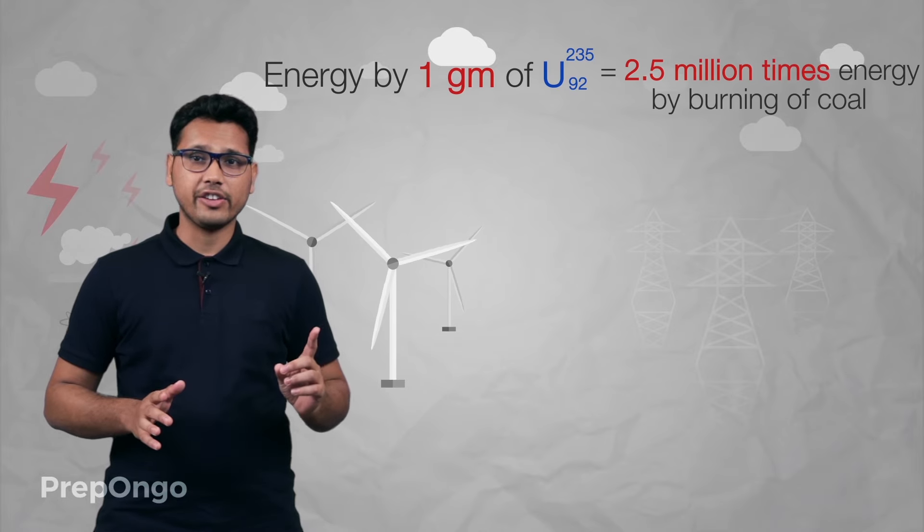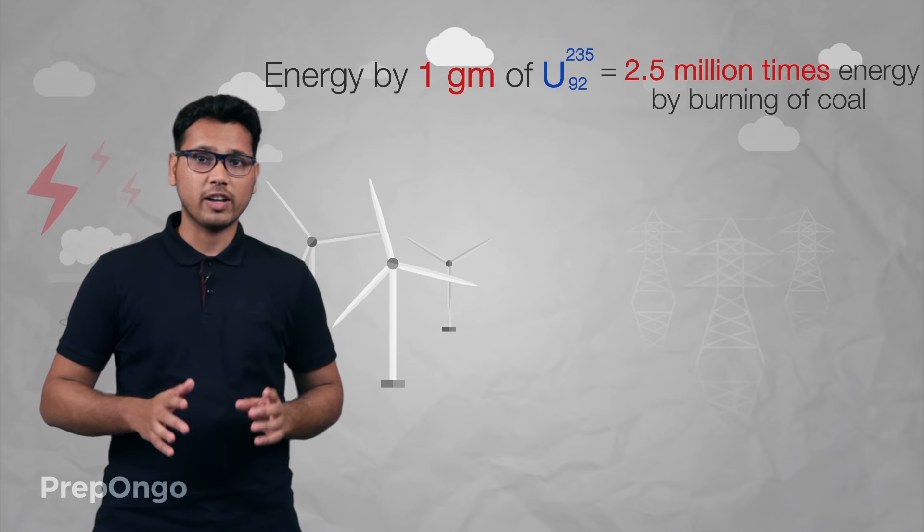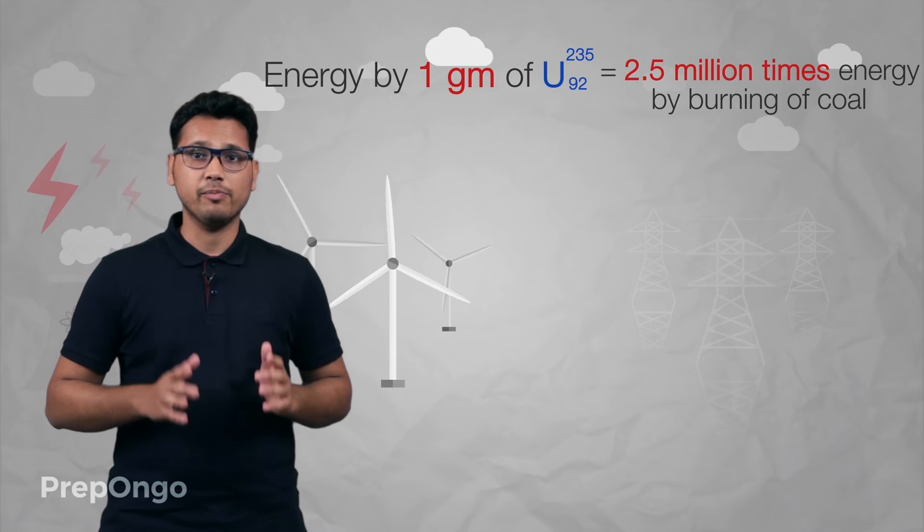Now the energy produced in this process is really huge. One gram of uranium-235 produces around 2.5 million times the energy produced by one gram of coal while burning.